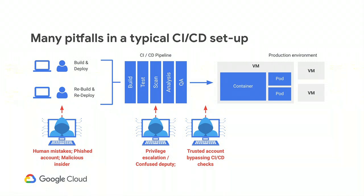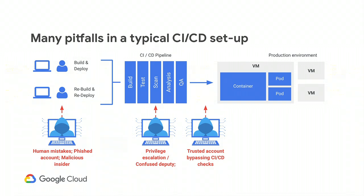In the developer phase, people could make mistakes, check in code containing vulnerabilities, have their account phished, or be a malicious insider. During the CI-CD phase, if you have one monolithic super-privileged robot account running the entire end-to-end process, you may experience a confused deputy problem — your pipeline may have a bug that gets tricked into reading source data and pushing random images to your image repository, with privilege escalation in the pipeline itself. In the deploy stage, a trusted account could bypass CI-CD checks. Having a CI-CD pipeline does not prevent deploying untrusted code.